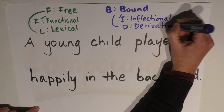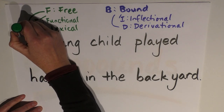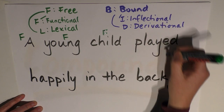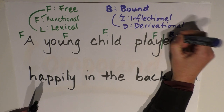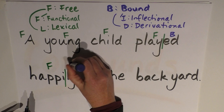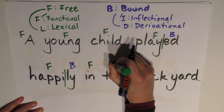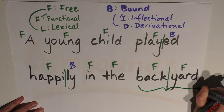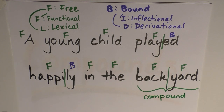Let's break these up now. 'A' is freestanding — F. 'Young' is freestanding — F. 'Child' is freestanding — F. 'Played' is divided into a freestanding part and a bound morpheme. 'Happily' again has a free part and a bound part. 'In' is free. 'The' is free. 'Backyard' can be divided into two parts — 'back' and 'yard' — but they're both free morphemes. The term for putting two free morphemes together is actually called compounding, which is our next video — an example of the compound we'll be looking at next.